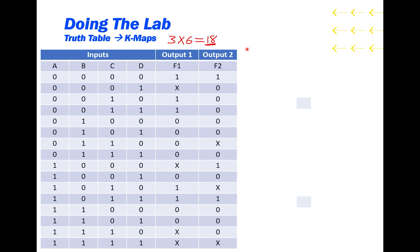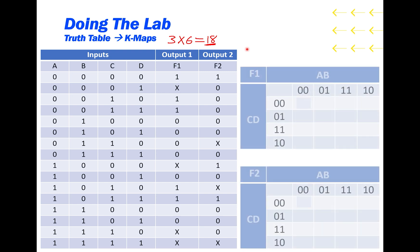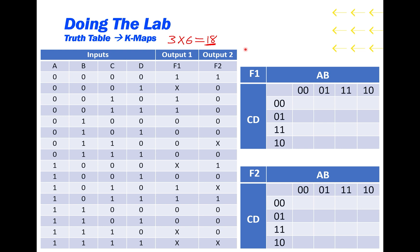To do those simplifications, I'm going to be using K-maps. Remember to fill out a K-map: we look at the A and B values for the columns and then the C and D values for the rows. So here we have the zero-zero entries, and function one has a one there, and function two also has a one there.